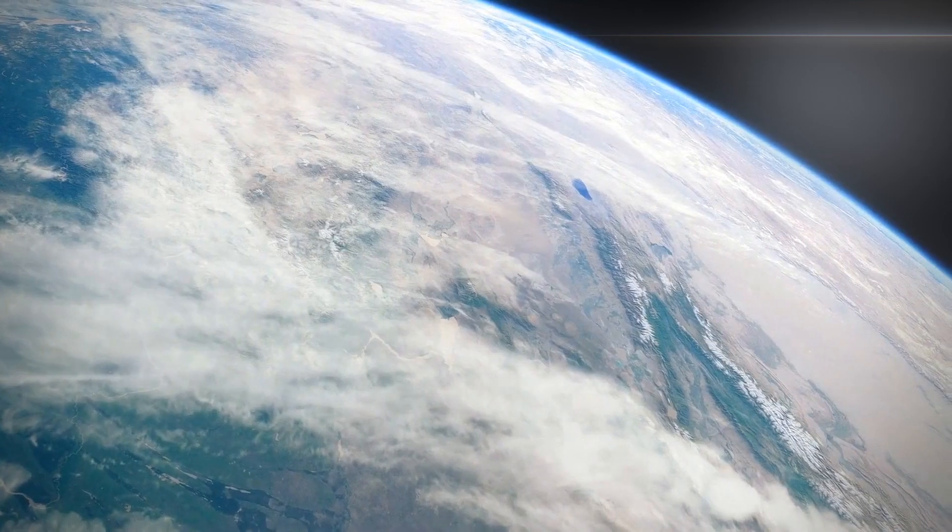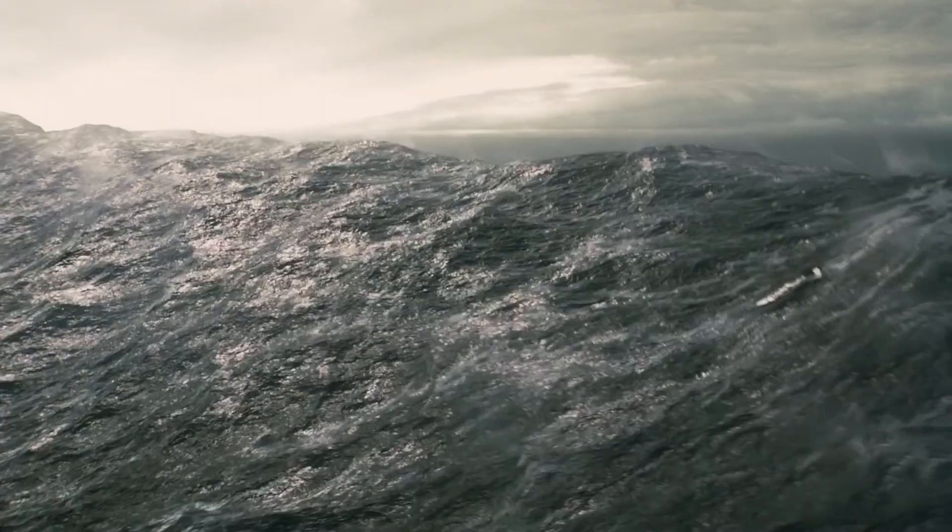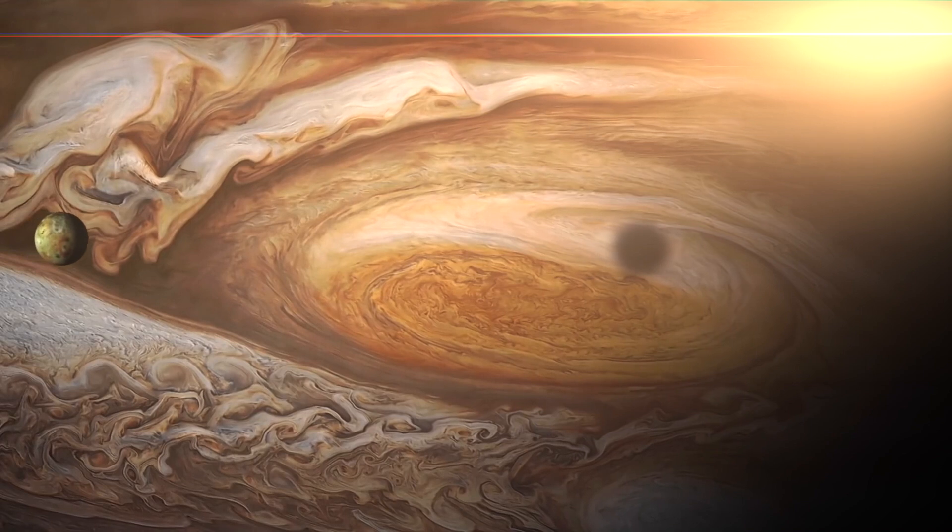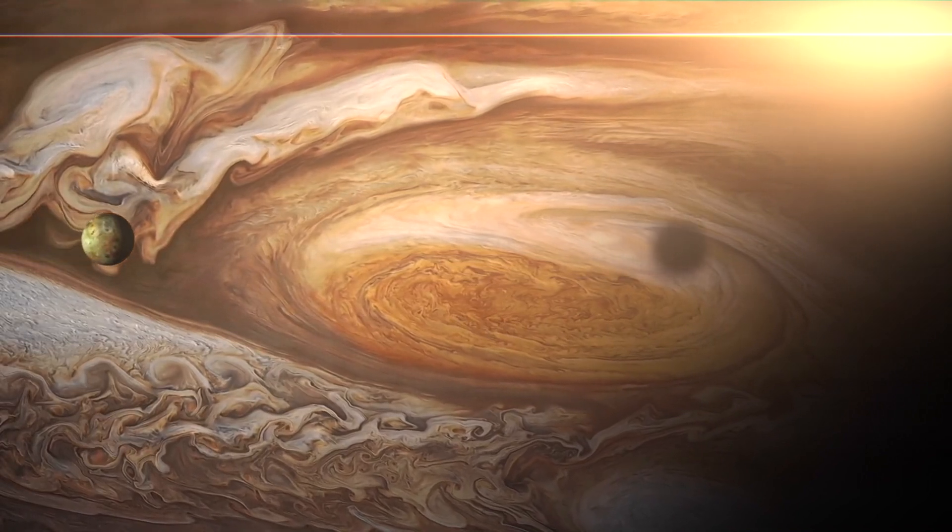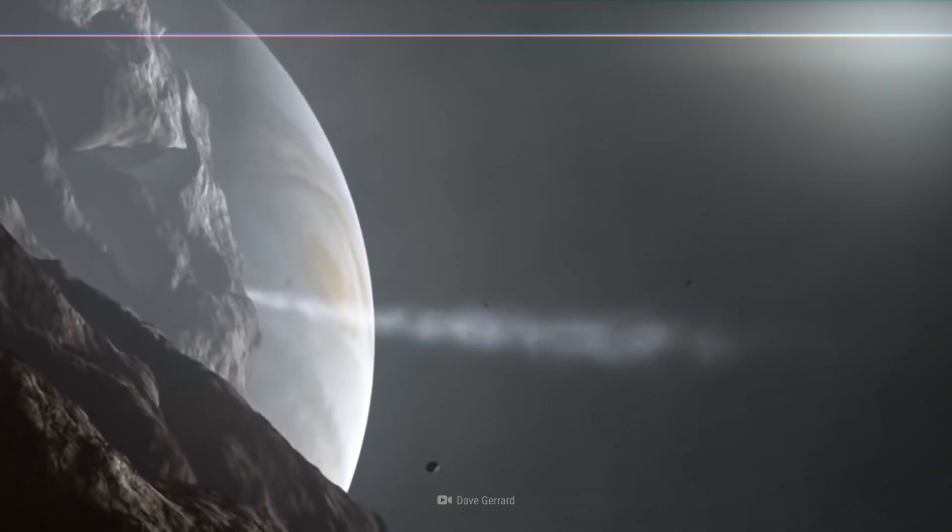Much in the same way that the moon exerts a tidal force on the Earth, which causes the ocean's levels to rise and fall throughout the day, Jupiter also exerts a tidal force on Io. But because Jupiter is significantly larger than the moon, its gravitational influence is much, much stronger.